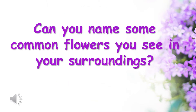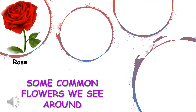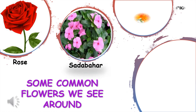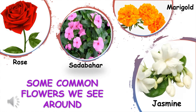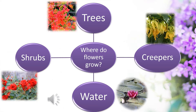There are so many flowers that we see in our surroundings. Some of them grow in our balcony or terrace, while some we see around our house. Some of the common flowers that we see in our surroundings are rose, sadabahar, marigold, jasmine and so on. I am quite sure most of you would be having sadabahar growing either in your balcony or on the terrace. Let us understand the places where the flowers grow.